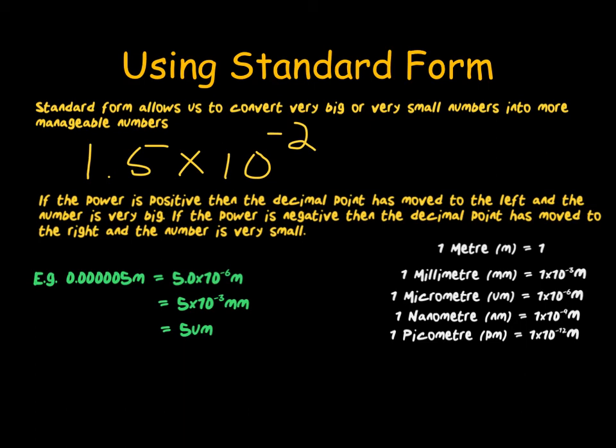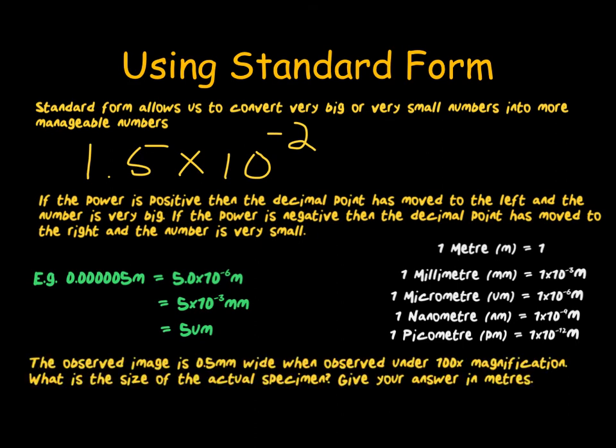If we now combine this standard form with the microscope calculation, we could get a question such as the following. The observed image is 0.5 millimetres wide when observed under 100 times magnification. What is the size of the actual specimen giving your answers in metres? First, we need to convert our 0.5 millimetres into metres, so this will be 5 times 10 to the minus 4. We now need to pick the correct equation. The actual size of the specimen is equal to the image size, that's our 5 times 10 to the minus 4, divided by our magnification, which was 100. This gives us 5 times 10 to the minus 6 metres. This could also be written as 5 micrometres. However, for this question, we were asked to give our answer in metres.